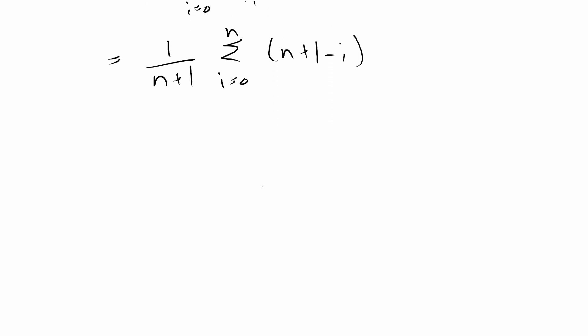Then we have 1 over n plus 1, from 0 to n, times n plus 1 minus i. From there we still have to get rid of the i. This is basically saying we have 1 over n plus 1, and then we have n plus 1 plus n plus n minus 1 plus 2 plus 1. Another way of thinking about this would be that this is i when i is from 1 to n plus 1.